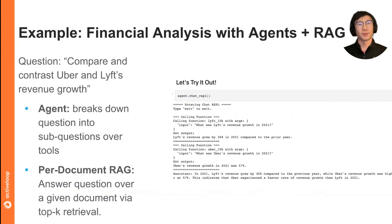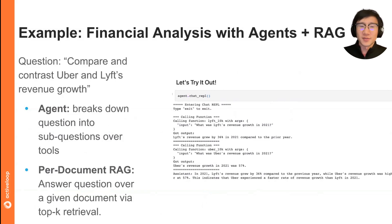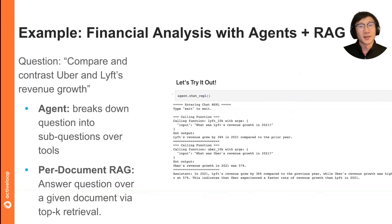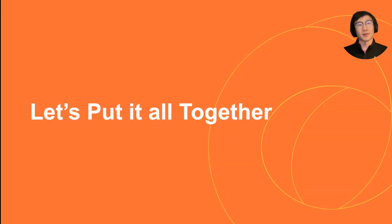A quick example highlighting this is financial analysis with agents and RAG, using SEC documents — though you can generalize this to any data source: medicine, legal, product reviews, consumer-based data. A very simple multi-part question is: compare and contrast Uber and Lyft's revenue growth. This requires looking up both companies' revenue growth. The nice thing about having an agent is it can break down the question into sub-questions over each set of tools — modeling Uber and Lyft as separate RAG pipelines — reason that it needs to use the Uber pipeline first, then Lyft's pipeline, and then combine the answers at the end.